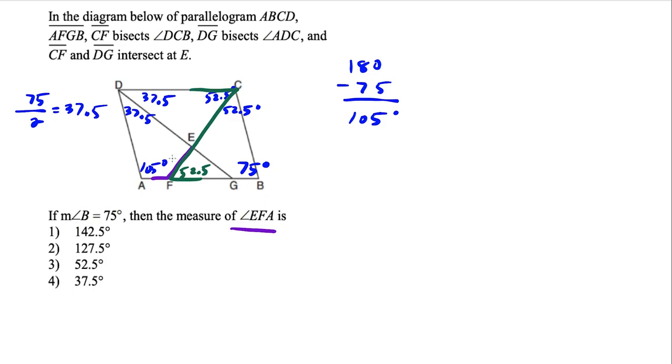So the measure of angle EFA is going to be 180 minus 52.5. And we'll put a point zero here. So when we subtract, it works out. So we borrow, make a seven, and we borrow here, make this into a nine, 10 minus five is five. This is seven. And this is two, this is one. So the missing angle would be 127 and a half degrees.